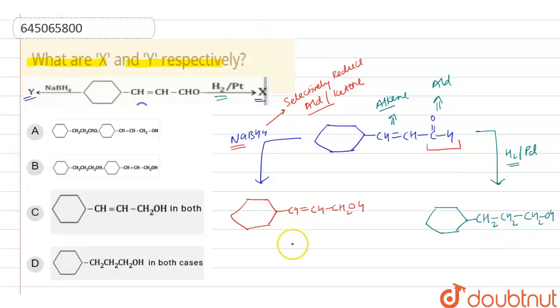So we can say that this is our Y and this is our X. In Y component, we can say that there is alcohol present and alkyne is present. But in X component, there is no alkyne present, only alcohol is present. So let's match with the options given in the question.